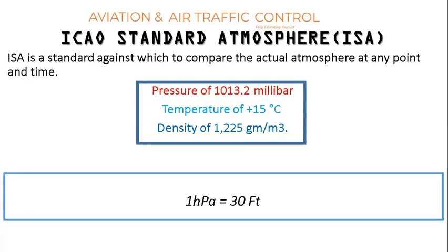Air pressure in the ISA is 1013 hectopascal. The pressure decreases with altitude at about 1 hectopascal per 30 feet gain in height in the lower levels of the atmosphere. Air temperature in the ISA is plus 15 degrees Celsius at mean sea level and decreases at approximately 2 degrees Celsius per 1000 feet gain in altitude.